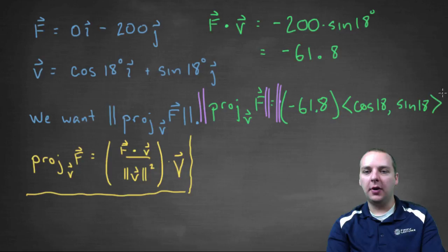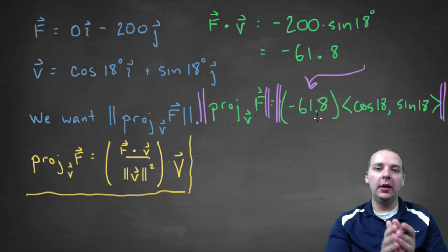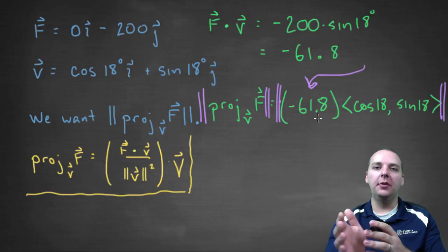The magnitude of the projection, which would be the magnitude of all this stuff. Notice this guy right here is a scalar, and scalars are allowed to be moved outside of a norm. The reason for that is pretty straightforward.